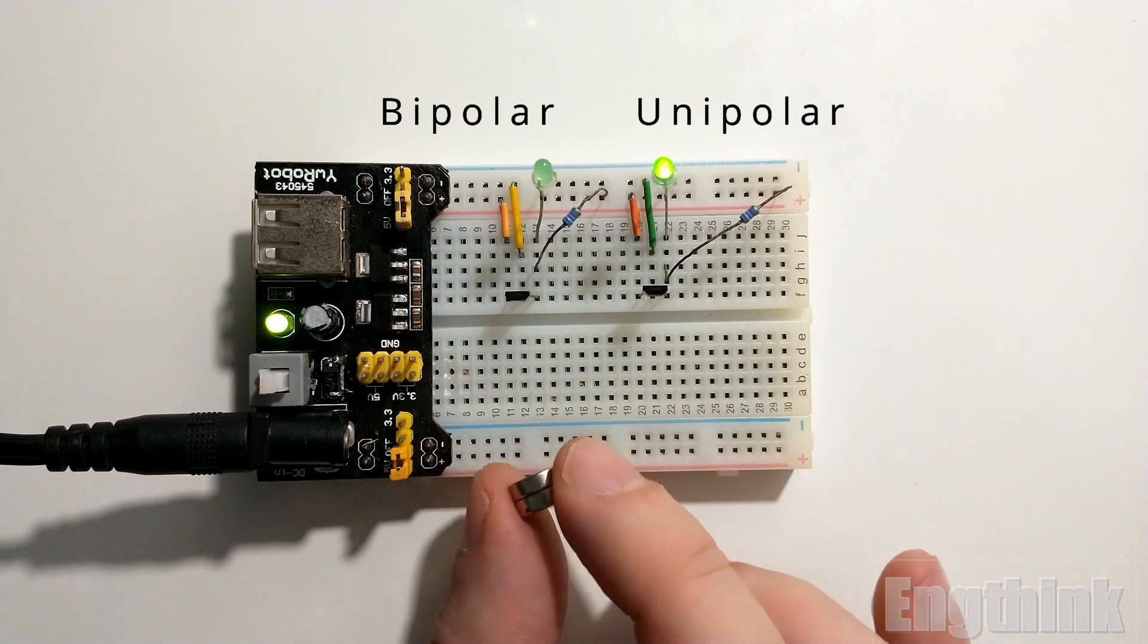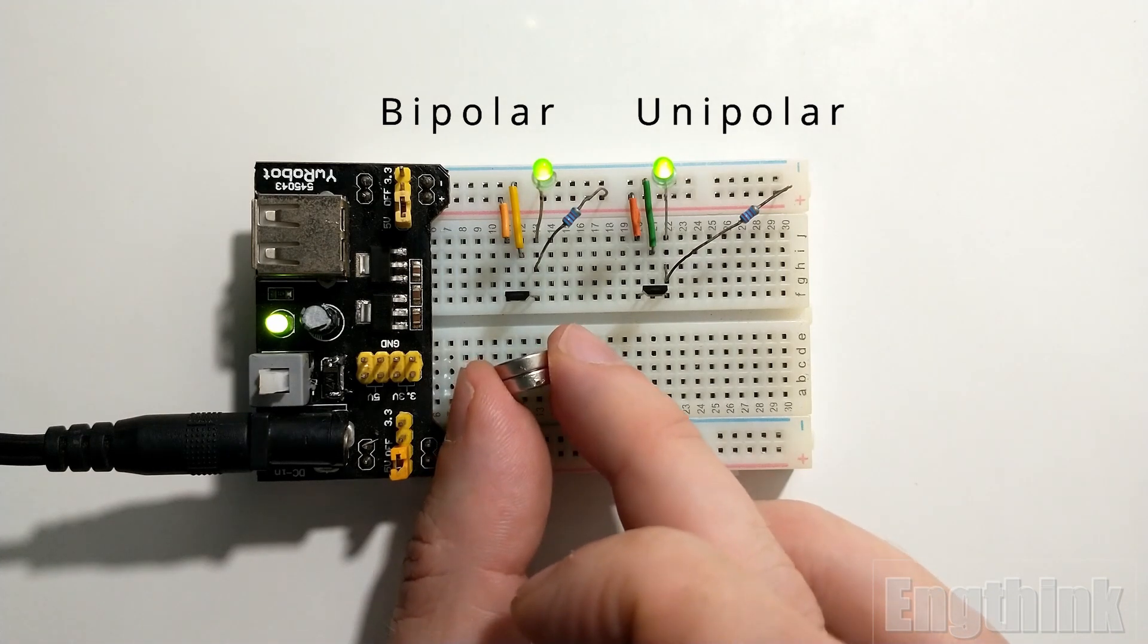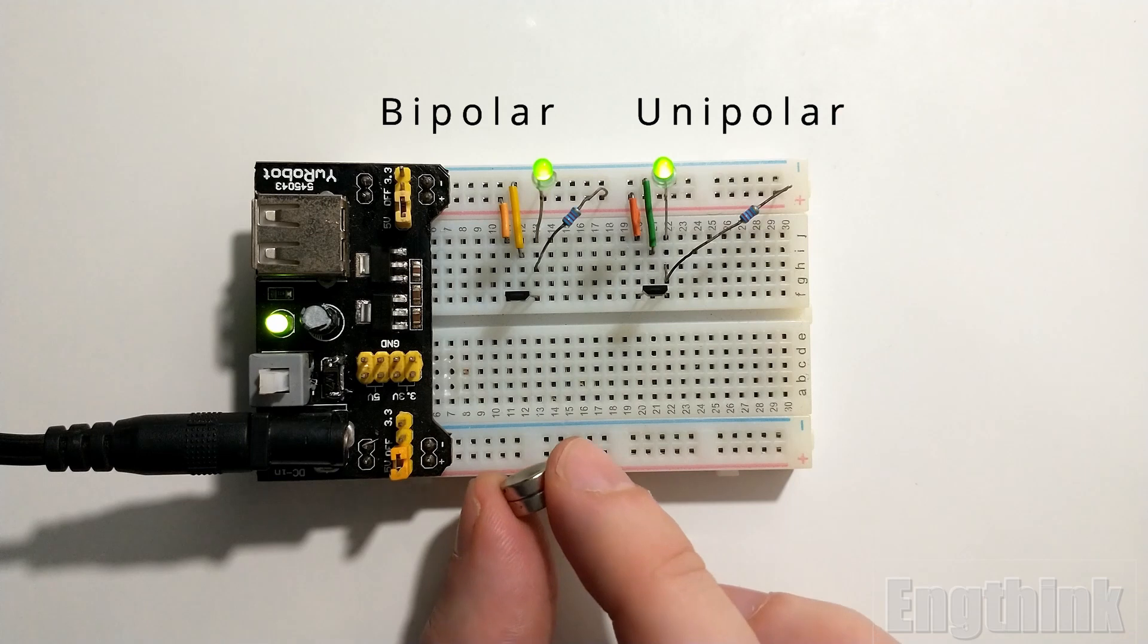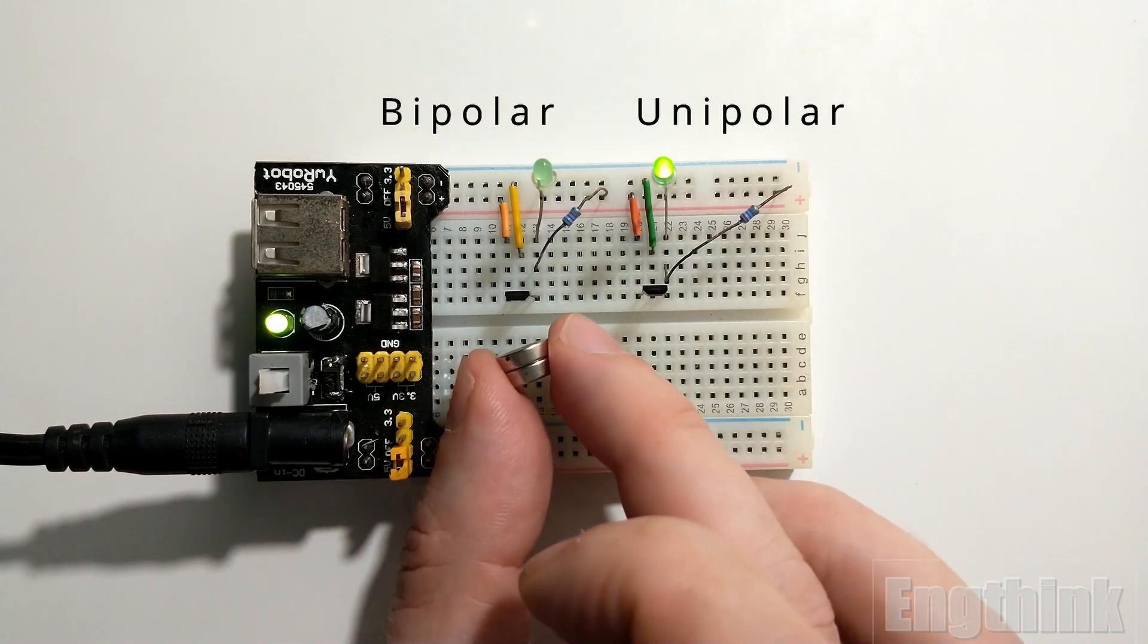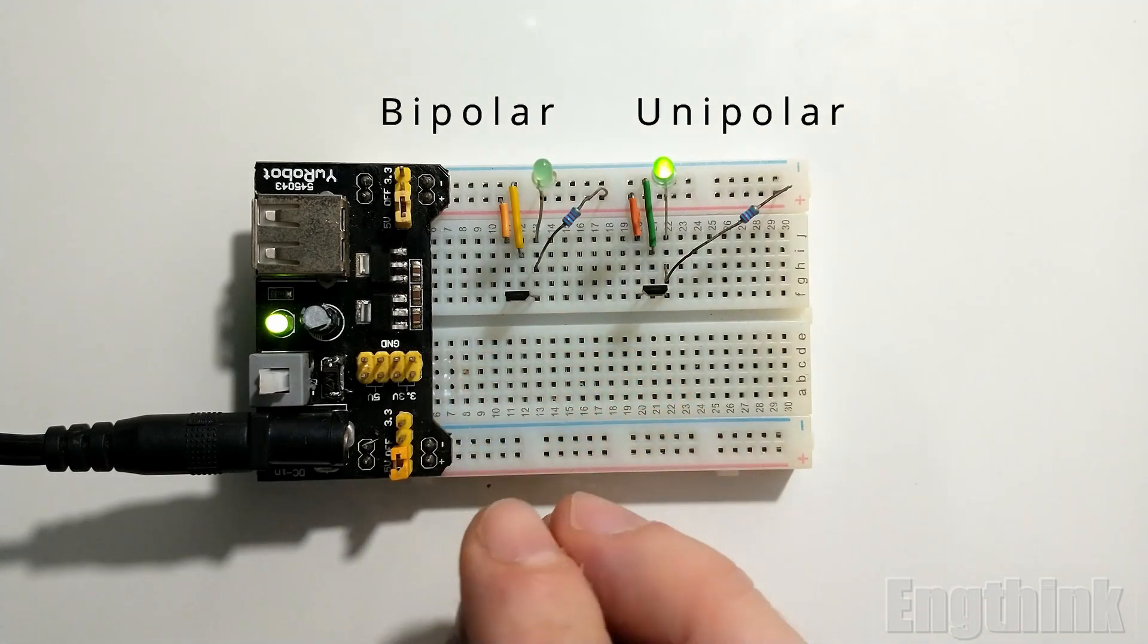The transition will only occur when we have the opposite magnetic field, in this case the north pole of the magnet. Resuming, for the bipolar mode, we have the north pole to switch on the LED and the south pole to switch off the LED.